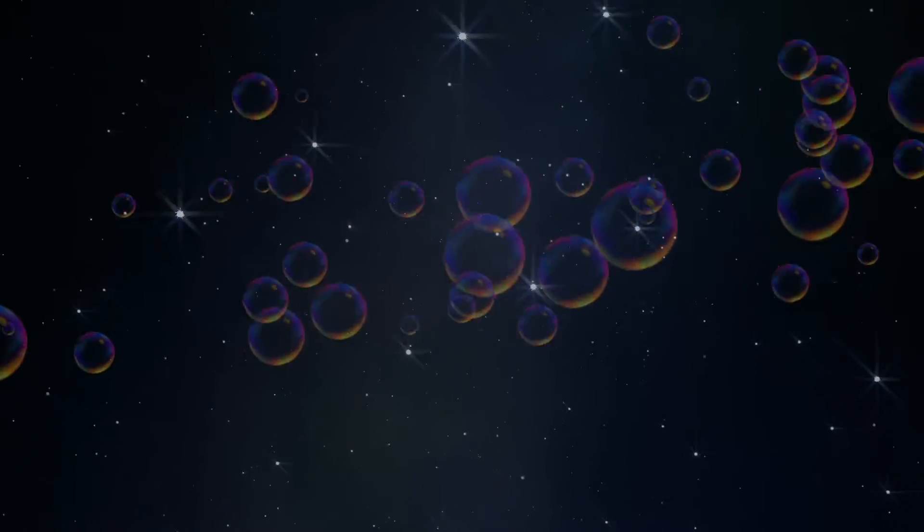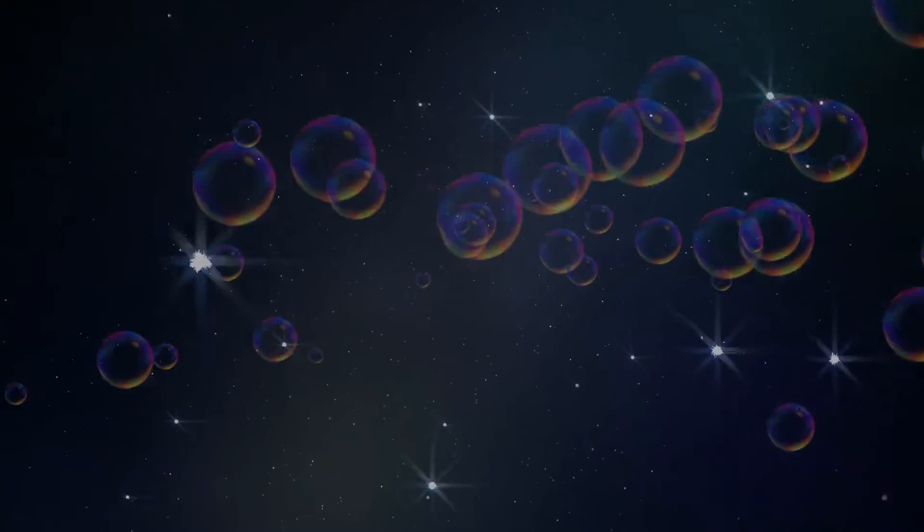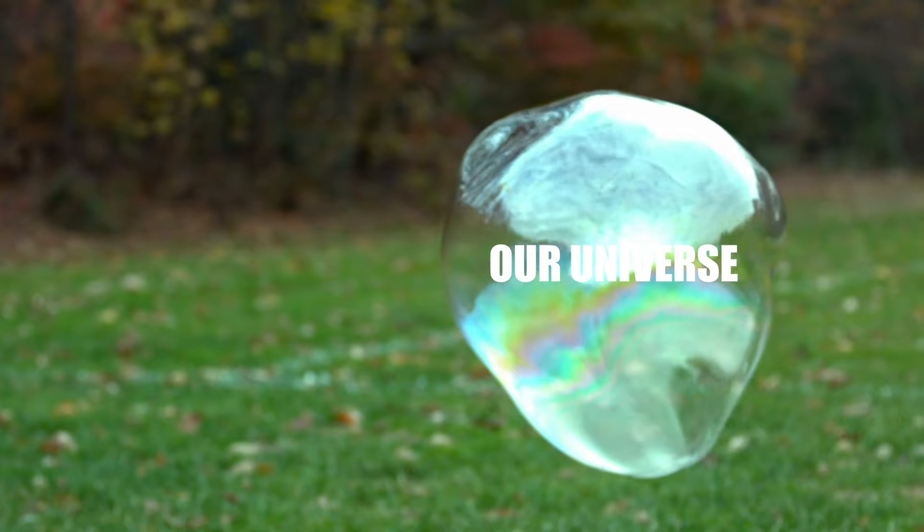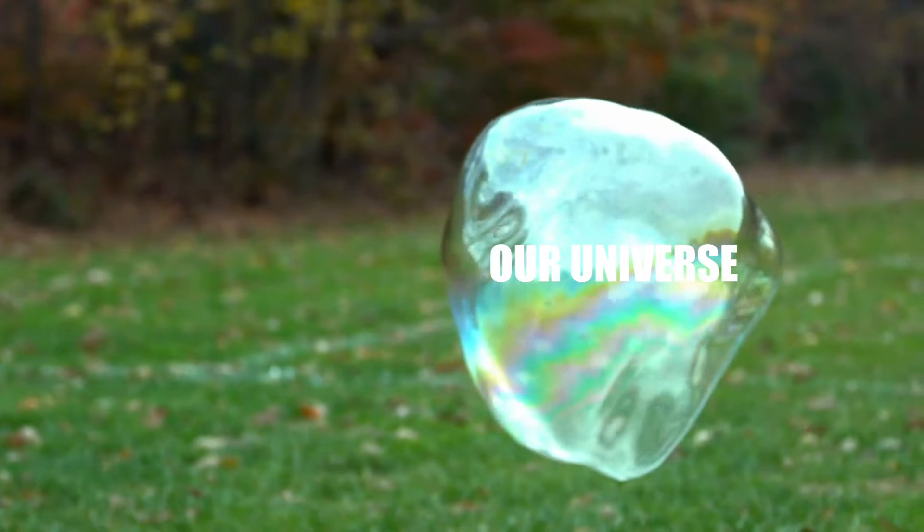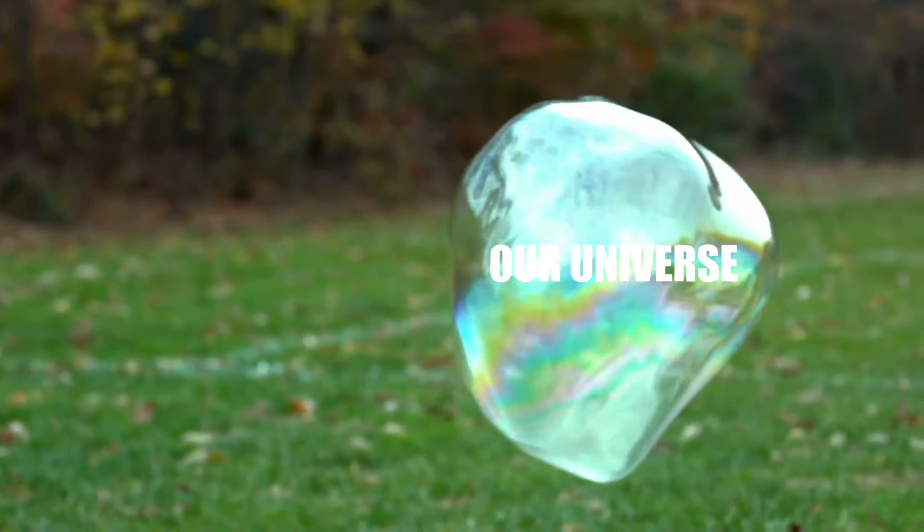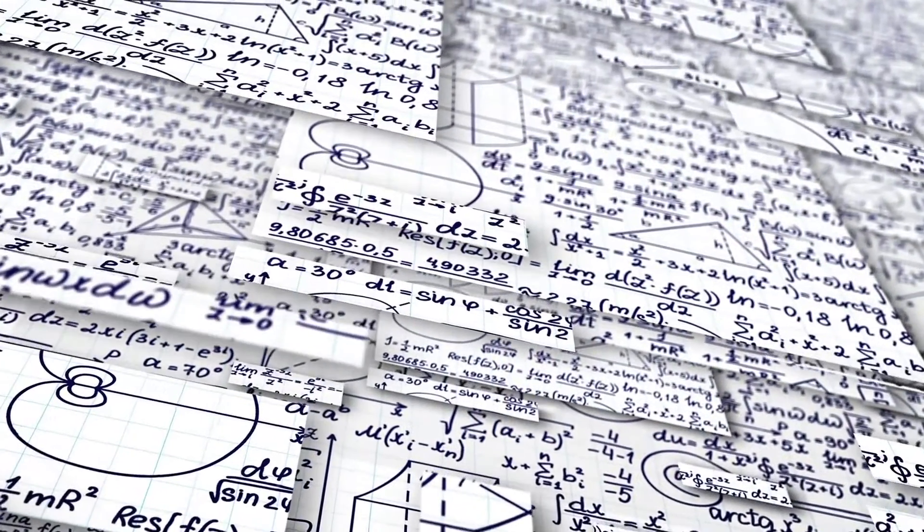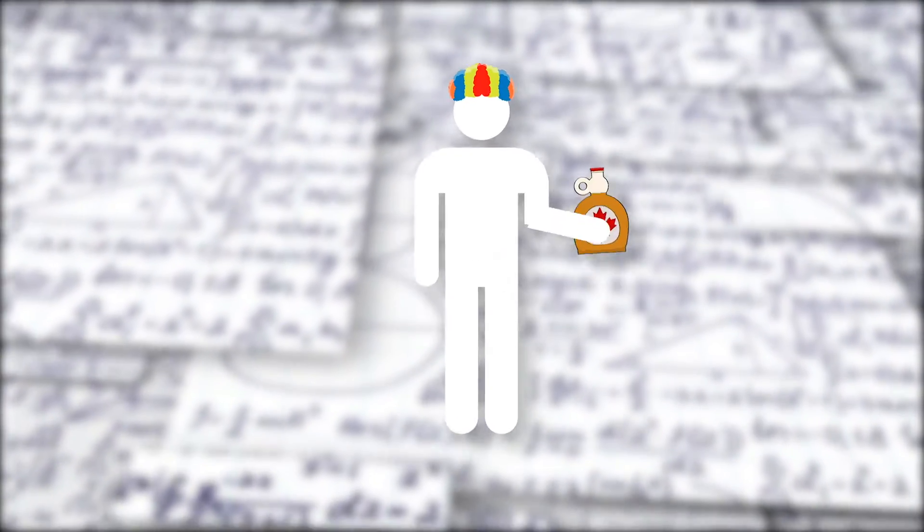These other bubble universes would have then moved away from us, beyond the limits of our observation. Some cosmologists suggest that our own universe exists as one of those bubbles. This could also mean that if there were multiple universes, each would have their own unique laws of physics.